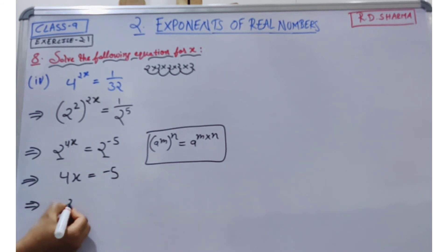So x is equal to negative 5 divided by 4.